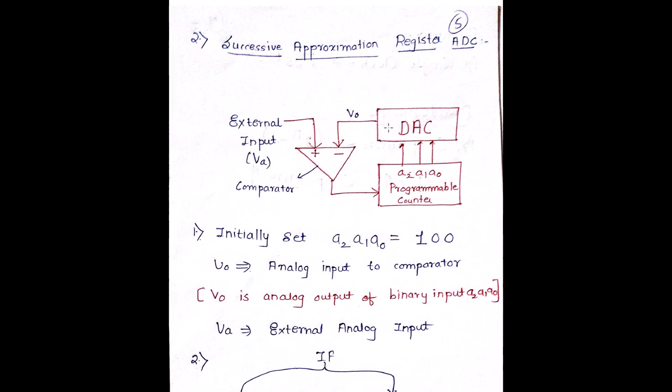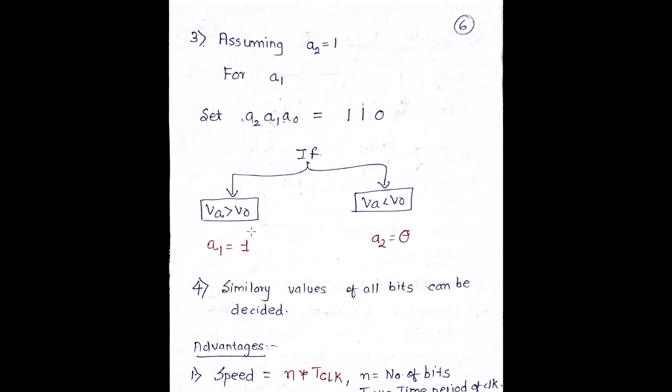So now our concentration is on A1. So 1, 1, 0 will be giving me a digital to analog output V0. Again, my VA will be compared to V0. If it is greater, then A1 is 1, or my A1 will be 0. Please make a correction over here. It is A1, not A2. I repeat, it is A1, not A2. Make this correction. So if my VA is greater than V0, A1 will be 1. If my VA is smaller than V0, my A1 will be 0.